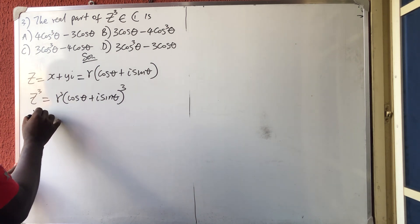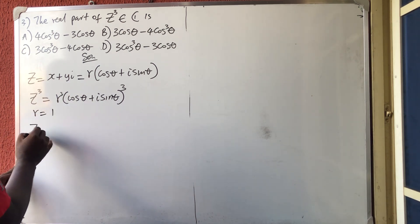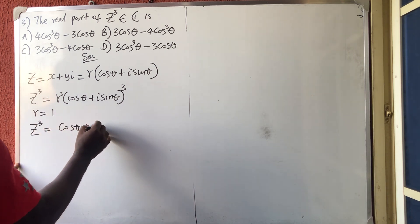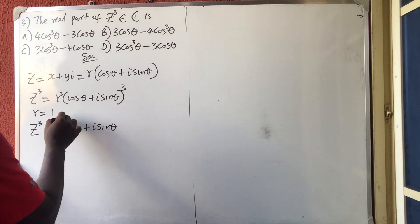Now let's assume that R is equal to 1. So, we have that Z raised to the power 3 is equal to simply cos theta plus i sine theta raised to the power 3.